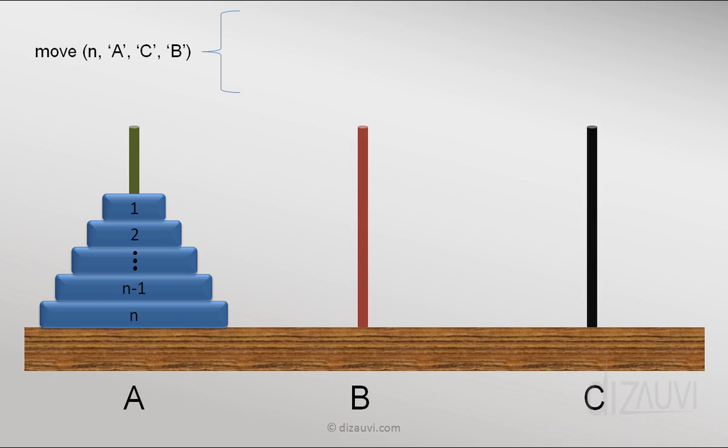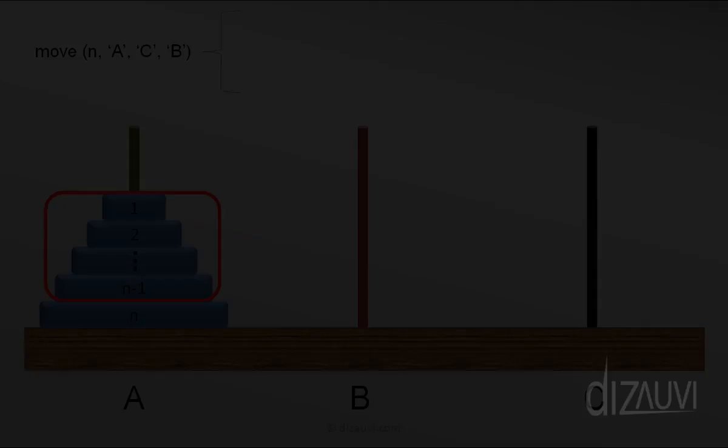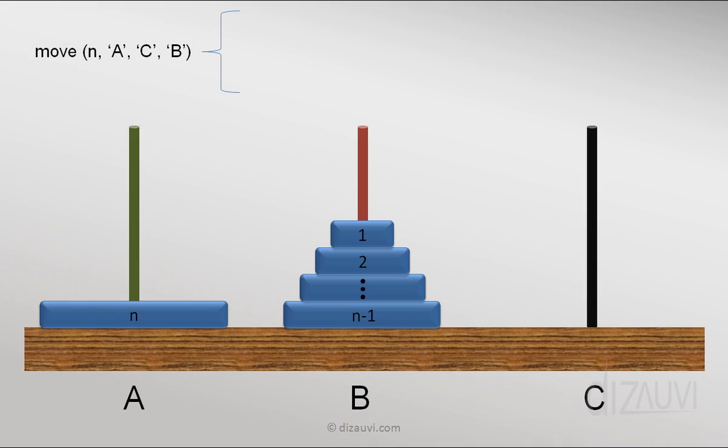So if we can do that, it essentially means that we should be able to move these n-1 disks from tower A to tower B using C as an intermediate, right? Think about it. Because the nth disk is the largest in radius, it can remain untouched when we are moving those other n-1 disks like that, right? So we should be able to move these n-1 disks from A to B using C.